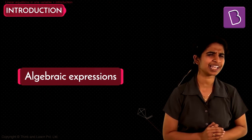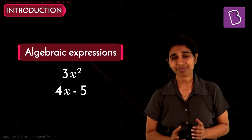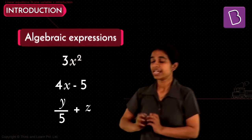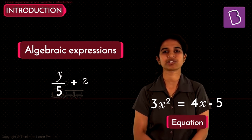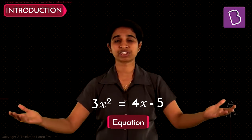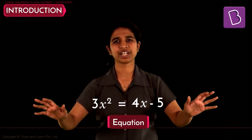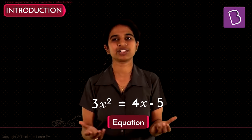An equation could be about fun things like height and cricket scores, or it could be about more algebraic expressions. You've seen things like 3x², 4x − 5, y/5 + z, and so on — these were all algebraic expressions. Pick any two of these, put an equal-to sign in between, and you have an equation. It says the two sides of the equal-to sign are exactly the same — it could be sentences, algebraic expressions, numbers, or anything.